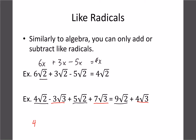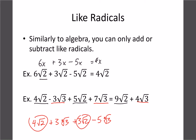It also matters if you have square roots versus cube roots. For example, 4 square root 2 plus 3 cube root 3 cannot be combined because they're not like. But 3 root 2 and a minus 5 cube root 3 — the root 2 terms combine and the cube root 3 terms combine, so 3 minus 5 gives negative 2 cube root 3.